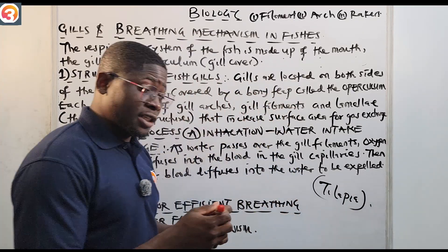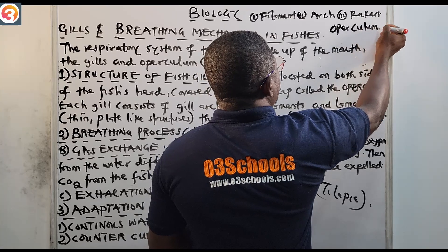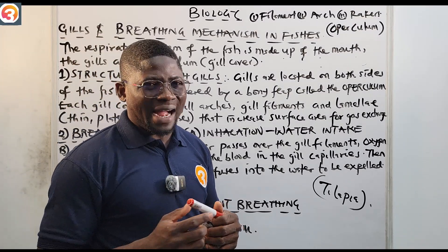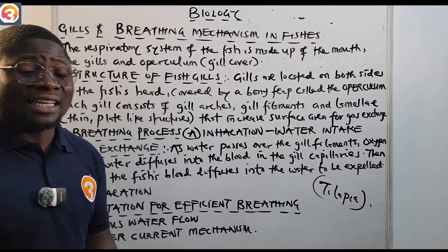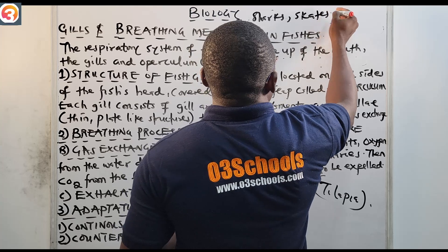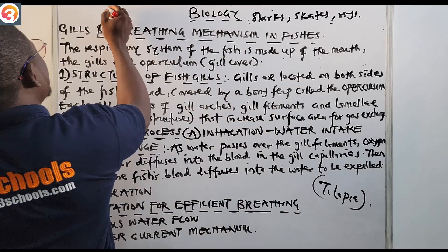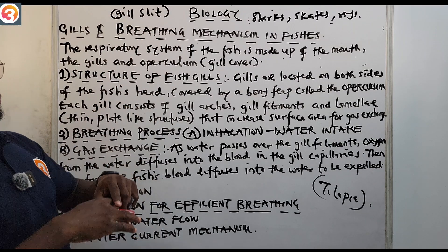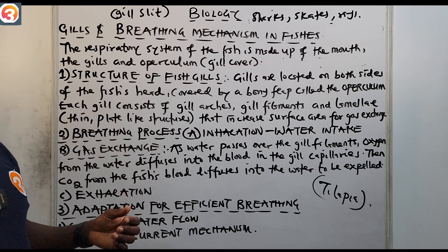In some bony fishes such as tilapia, they possess what is called the operculum (O-P-E-R-C-U-L-U-M). The operculum helps to cover the gills. In cartilaginous fishes such as sharks, skates, and rays, they have what are called gill slits (G-I-L-L-S-L-I-T-S), which open directly to the outer body of the fish — directly to the outside.